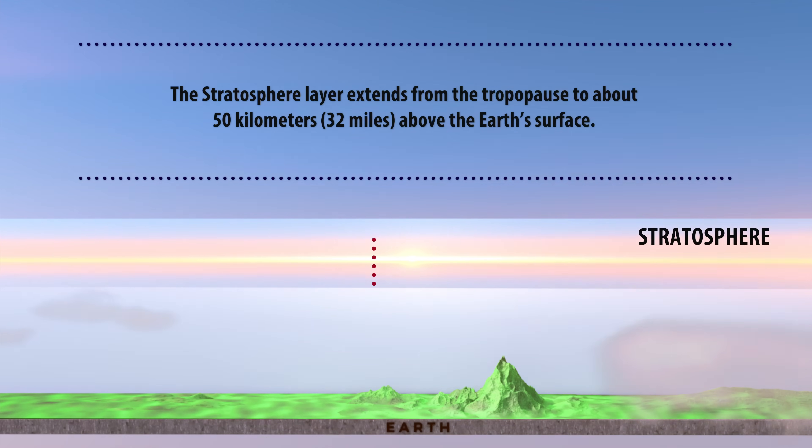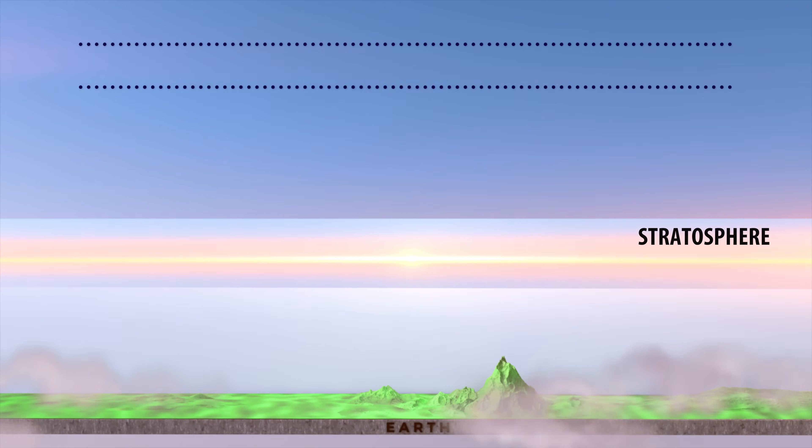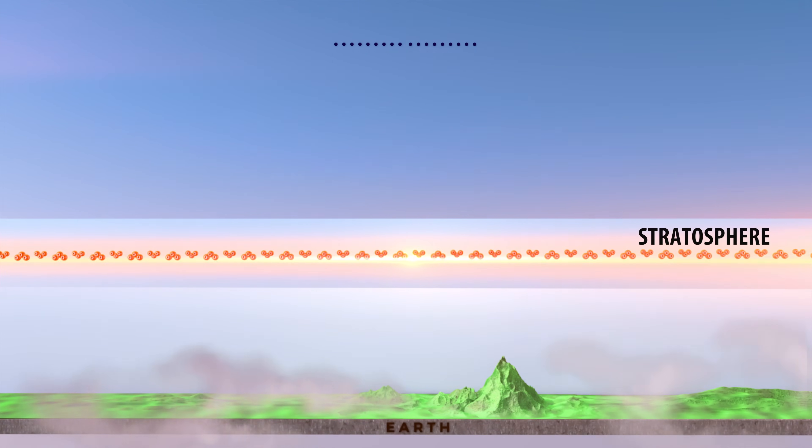The stratosphere layer extends from the tropopause to about 50 km or 32 miles above the Earth's surface.